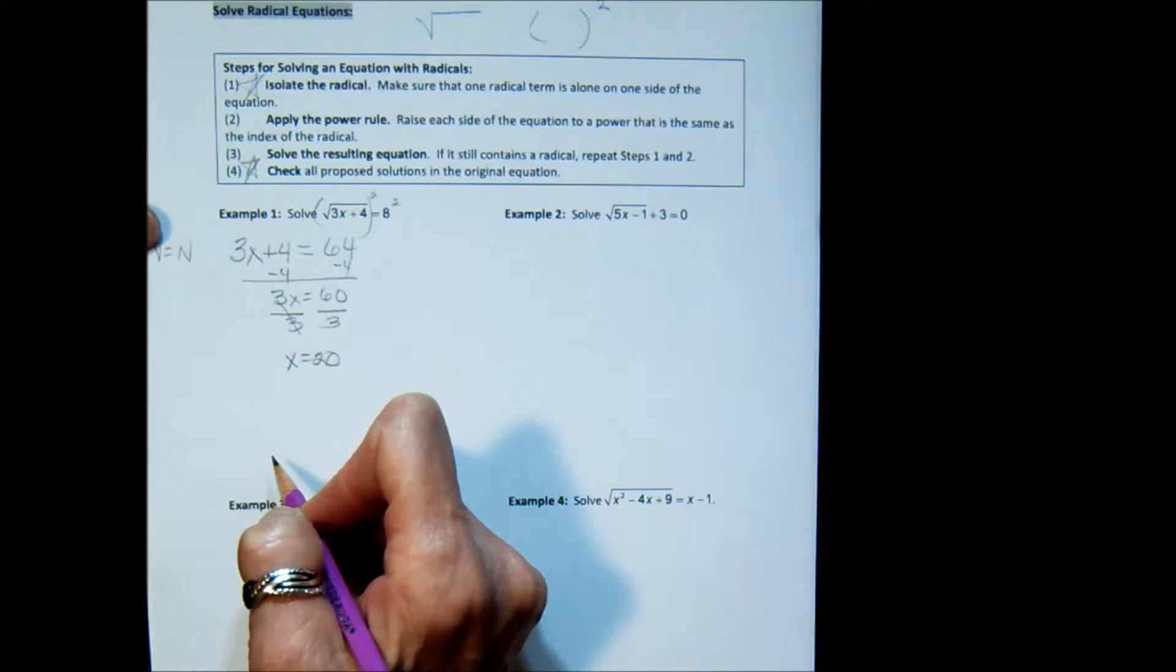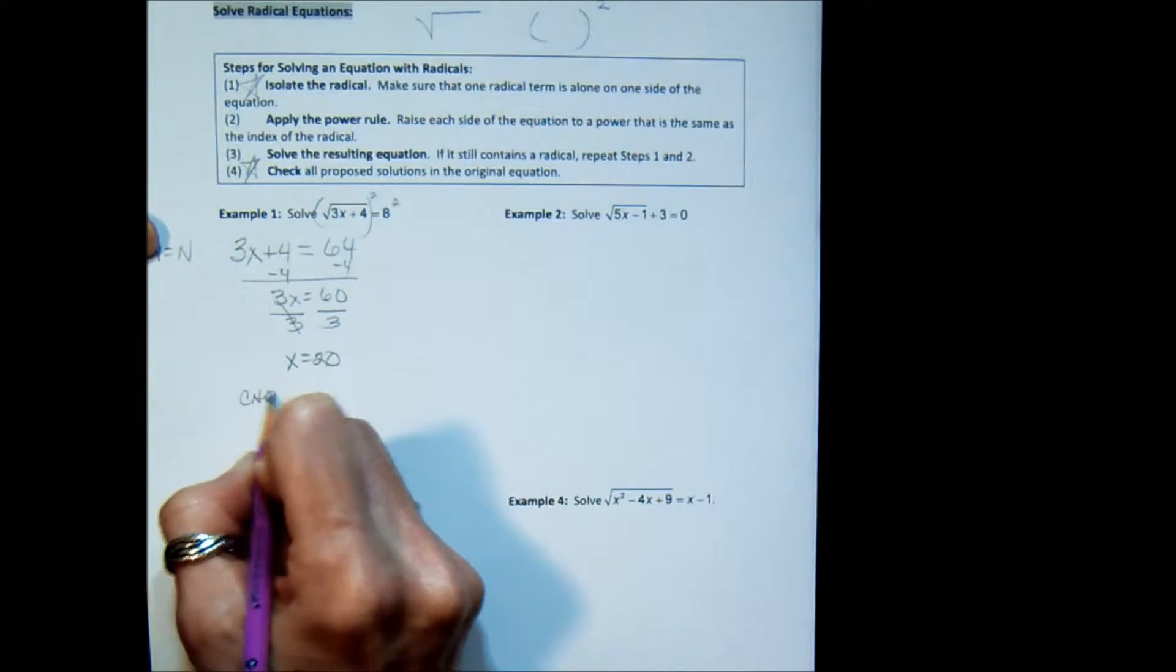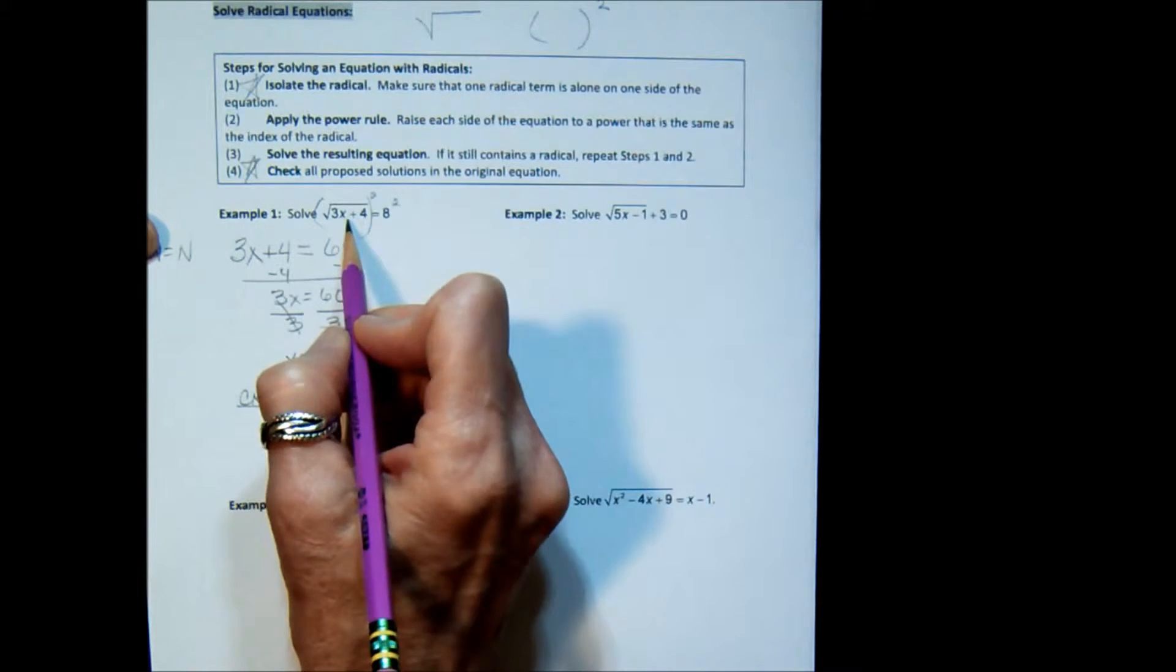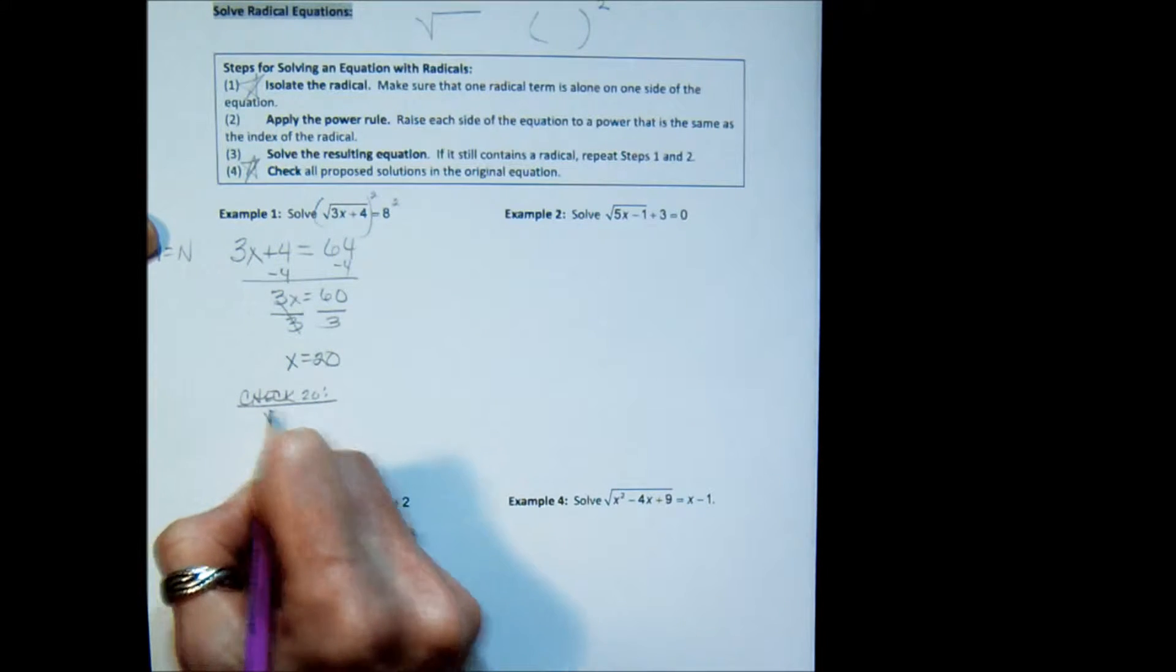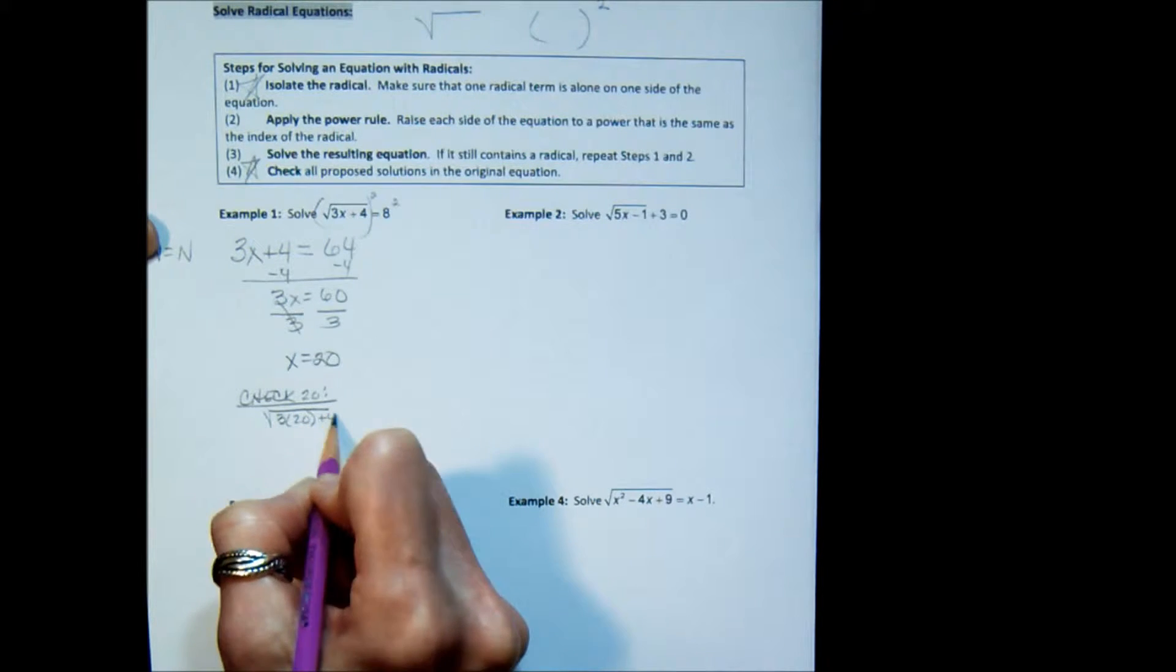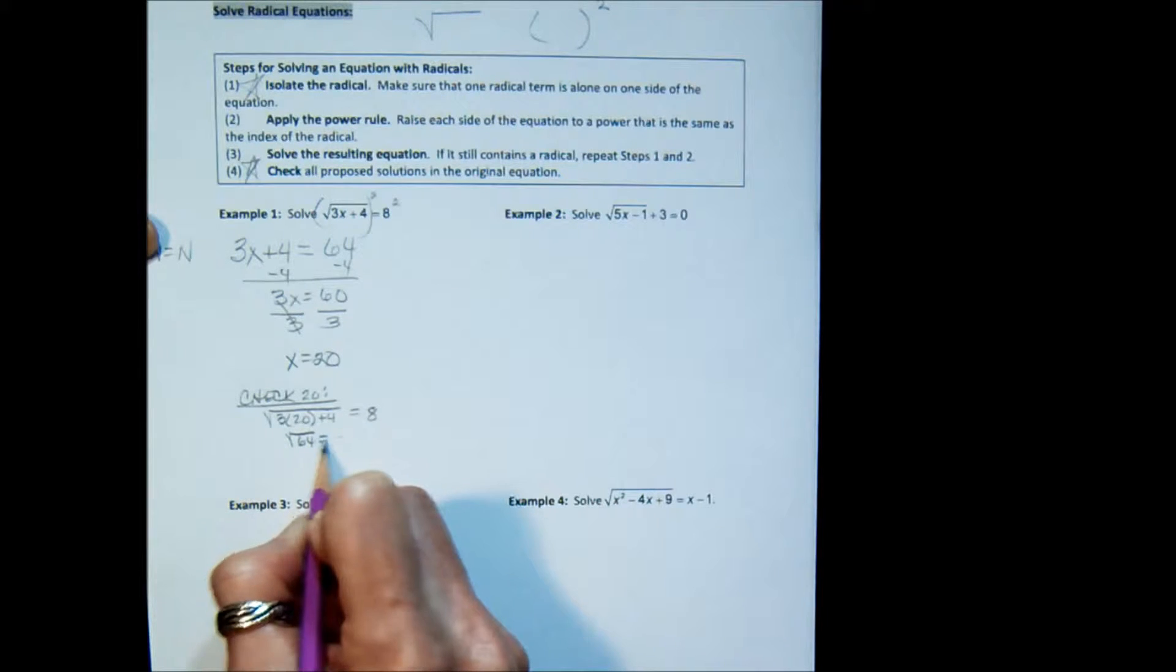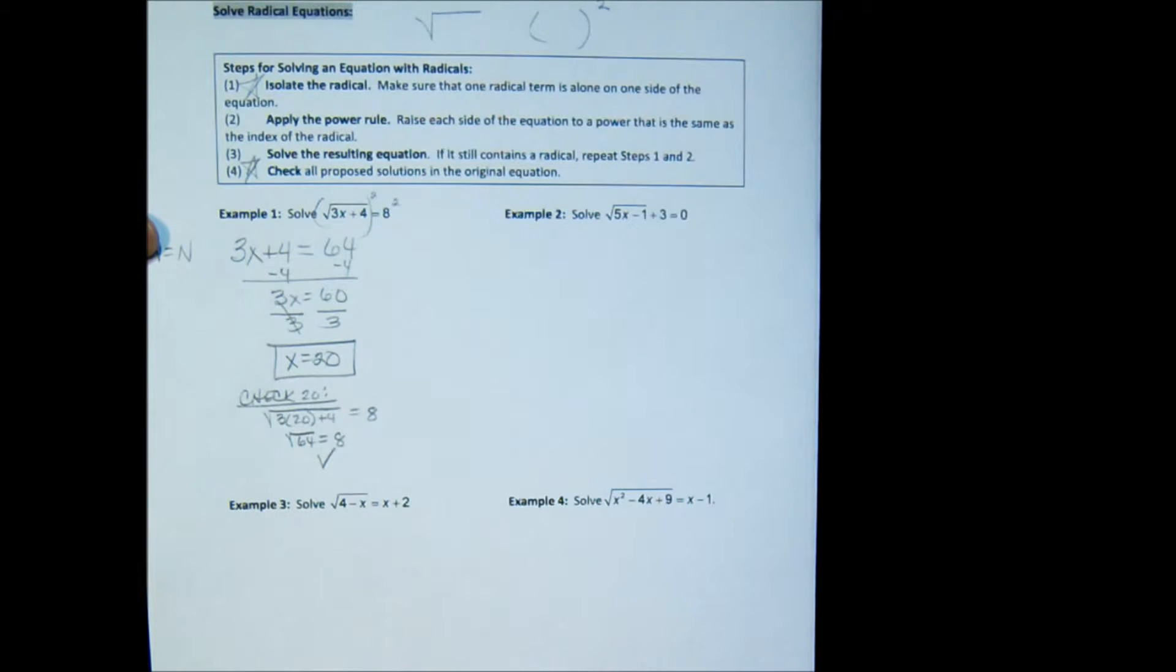Normally we would be finished, but because we squared both sides we are required to check the answer. So we're going to check 20 in the original equation before we squared. Square root of 3 times 20 plus 4, is that equal to 8? Is the square root of 64 equal to 8? Yes it is, so x equals 20 is our solution. That was a very simple one.